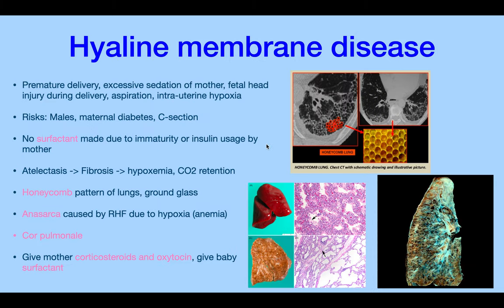Hyaline membrane disease is due to premature delivery, excessive sedation of the mother (reducing cortisol), fetal head injury during delivery, aspiration, and intrauterine hypoxia. Risk factors include males, maternal diabetes, and a C-section gone wrong. No surfactant is made due to immaturity or insulin usage. The pathology is atelectasis — collapse of the alveoli — and honeycombing as fibrosis sets in.